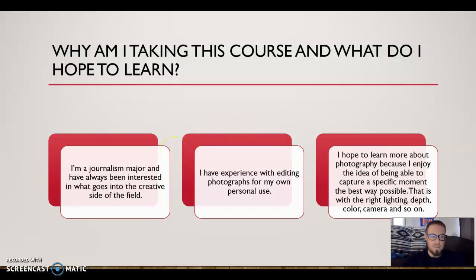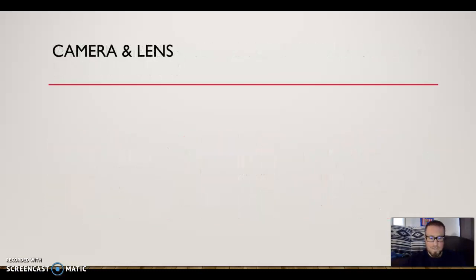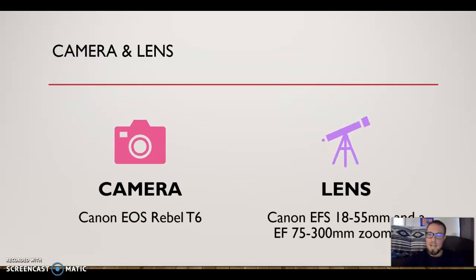Before this, I just used my iPhone, so it'll be interesting to use something different. As for my camera and lens, I have a Canon EOS Rebel T6. It came with two lenses as a bundle package from Best Buy — a Canon EF-S 18–55mm and an EF 75–300mm zoom lens. I don't really know a lot of detail on those; I'm just going to have to use them and learn about them.